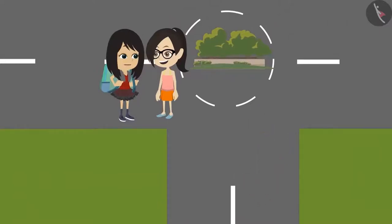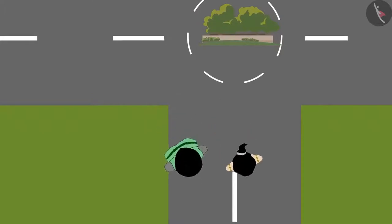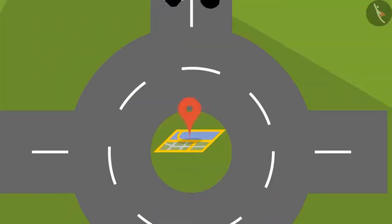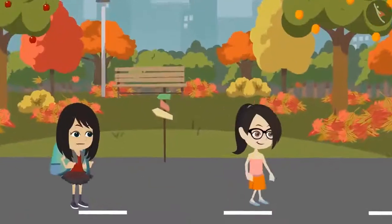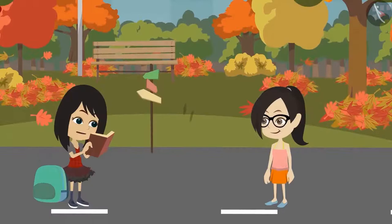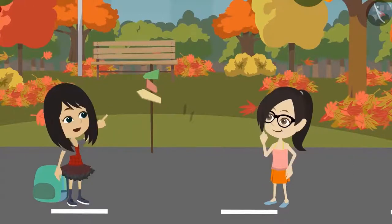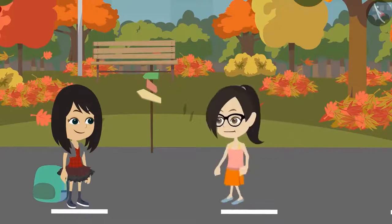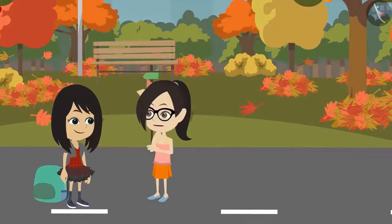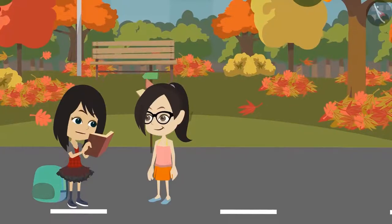Vandana, where are you going? We should check the directions given by Madam. Look, there is a garden over there and a road to the right and left. Then which road should we take? Madam has not mentioned anything about a garden. I am not able to figure this out. Okay, let us do one thing — let's make a drawing according to the directions given by Madam.